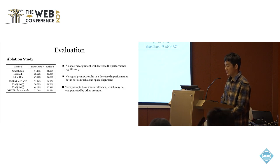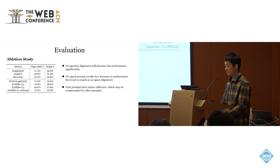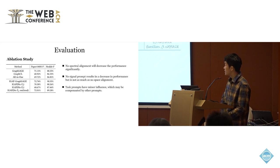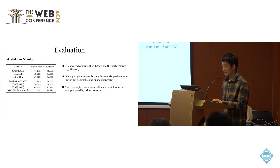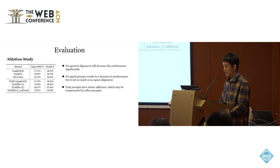We conduct the ablation study to analyze the effectiveness of different parts. We find that if we remove graph structure alignment, the performance will decrease significantly. And if we remove graph signal alignment, the performance will also decrease, but not as much as the structure prompt, which may be because the structure prompt can compensate for the graph signal gap. In our experiments, the task prompt has a minor influence, and we think it may be because this gap can be compensated by the other two prompts.